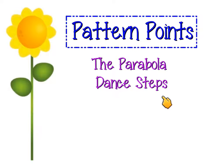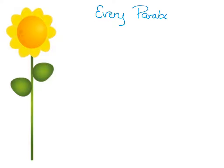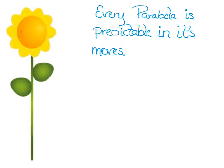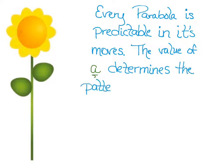I call it the parabola dance steps because every parabola is pretty predictable. The left side matches the right side, and you're going to see in a minute that there's some patterns that evolve as a result of certain features. Every parabola is predictable in its moves, and the value of A determines the pattern of the points.